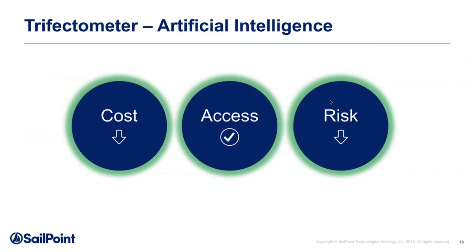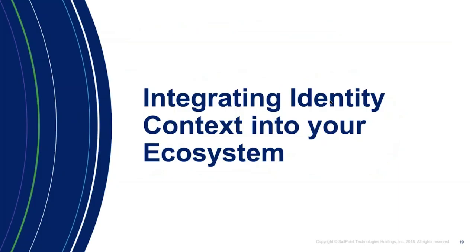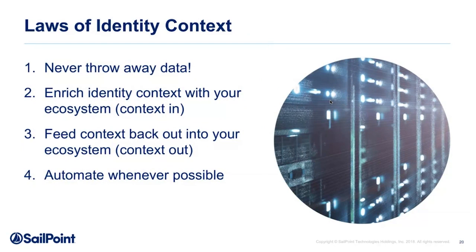Now our trifectometer is very happy. Cost is down because machines are doing more of the work. People are getting access to what they need. Risk has decreased because the people governing data are spending less time on junk they don't care about and more time focusing on what's actually risky.